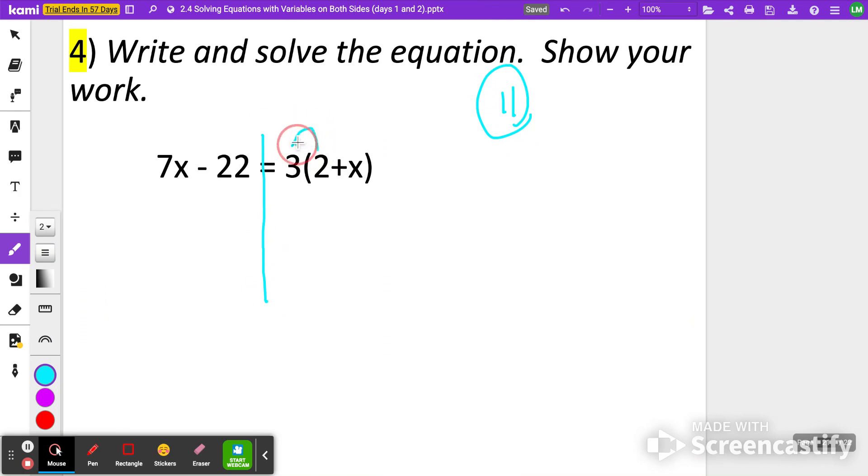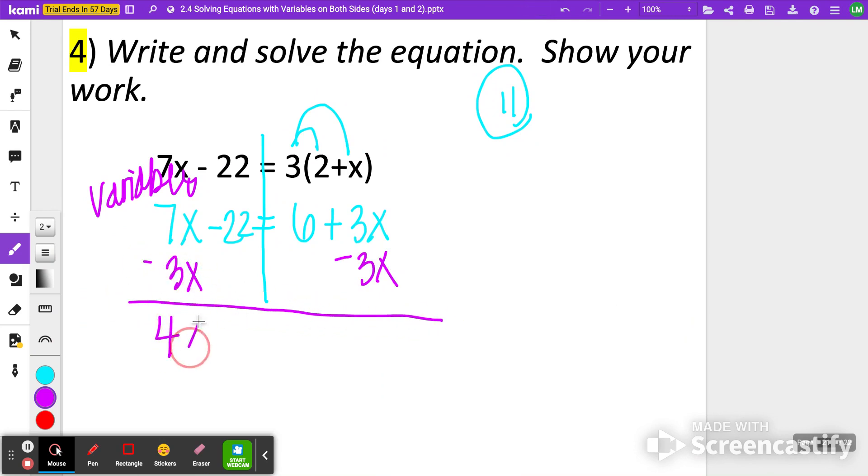All right. First thing I'm going to do is distribute. 3 times 2 is 6 and 3 times x is 3x. Over on the left side, I still have 7x minus 22. I'm going to move all of my variables to the left side. So let's do that first. I'm going to subtract 3x from both sides. 7x minus 3x is 4x minus 22 is equal to 6.